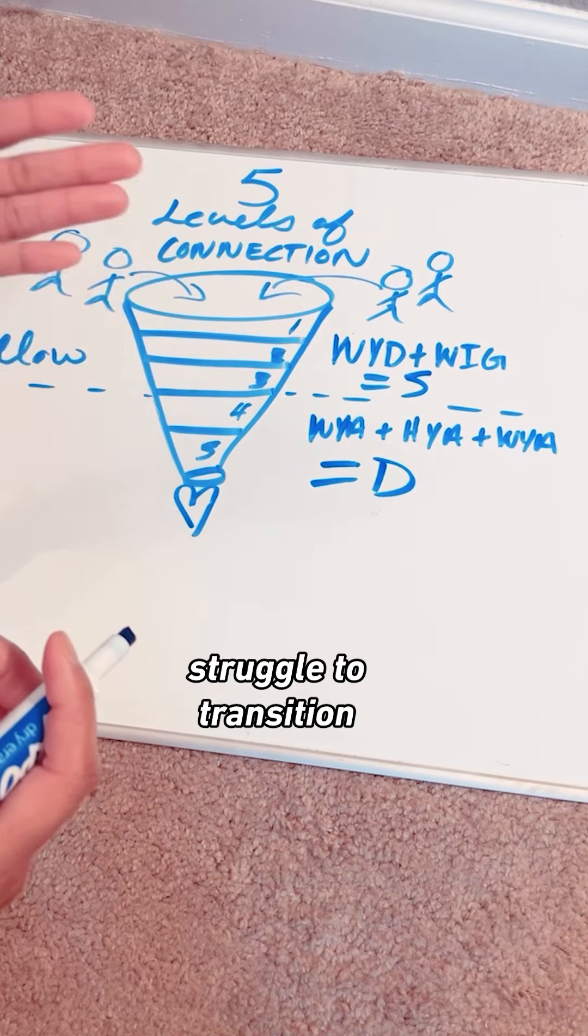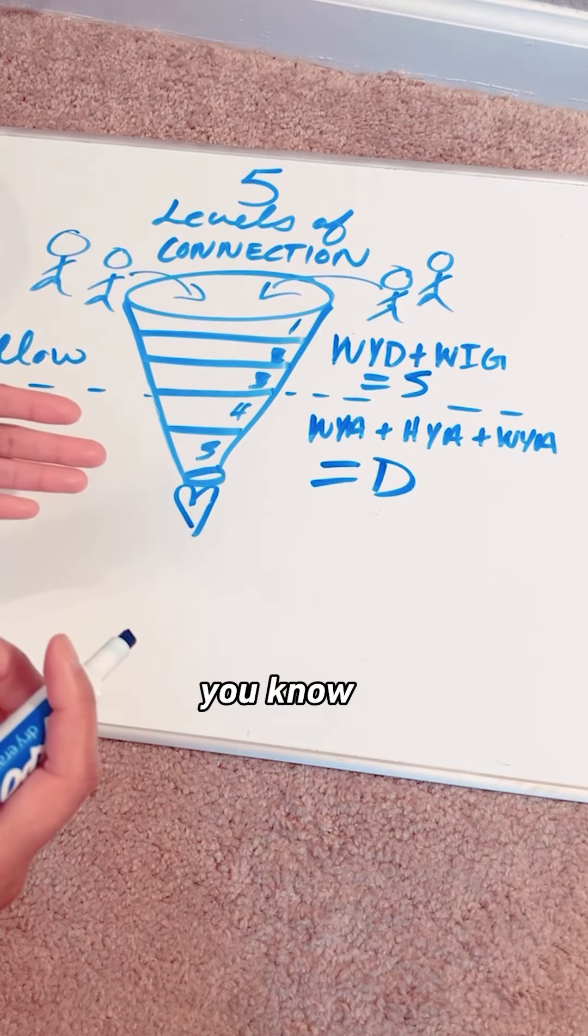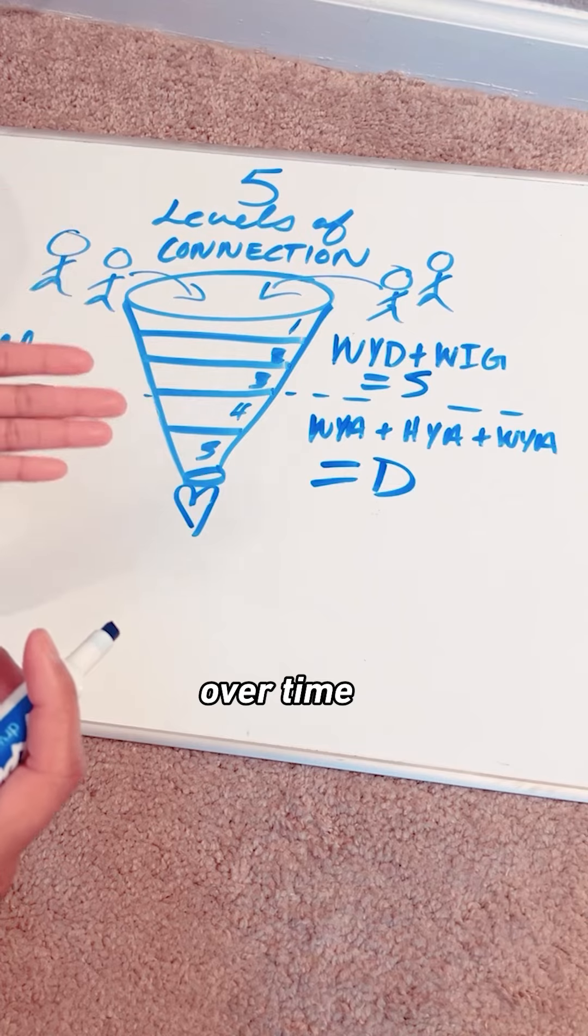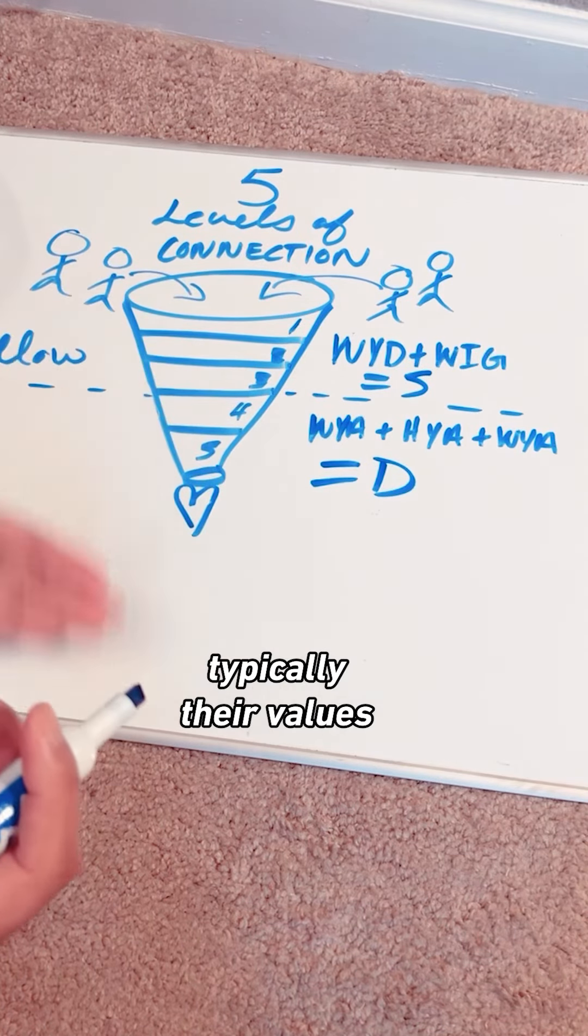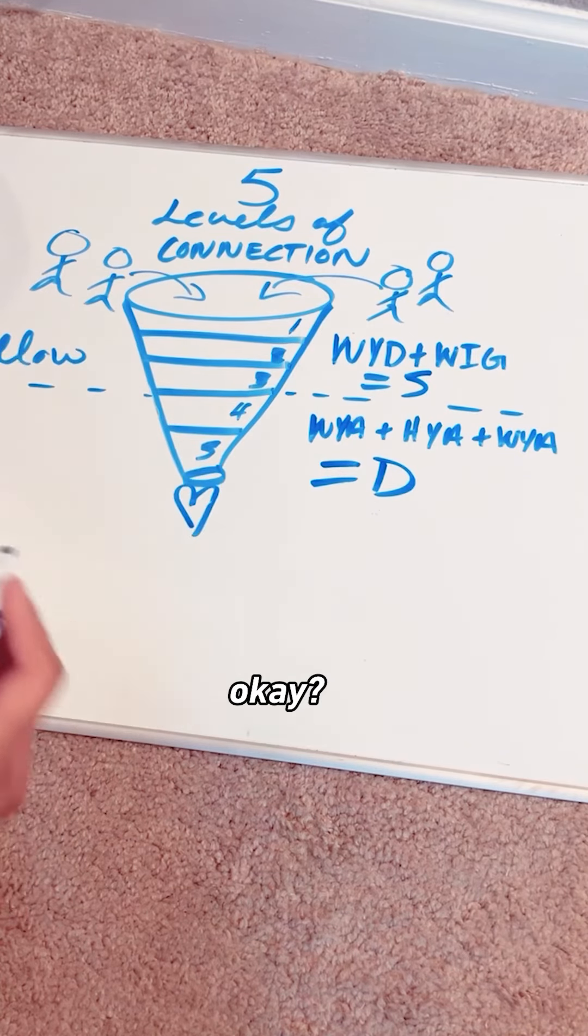This is why relationships struggle to transition. This is why people struggle to maintain relationships over time, is because these things constantly change. And a person, typically, their values, who they are at the core of them doesn't.